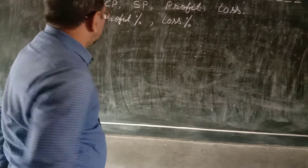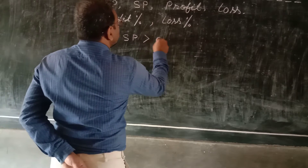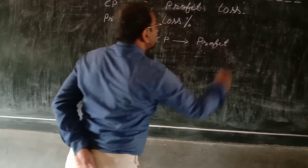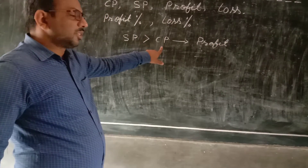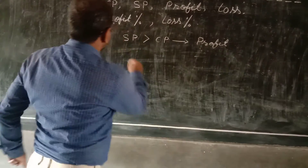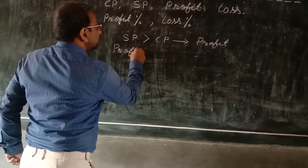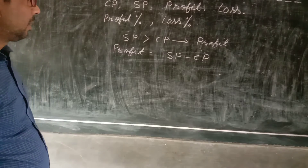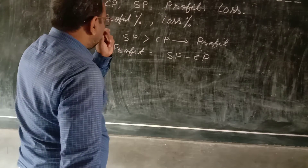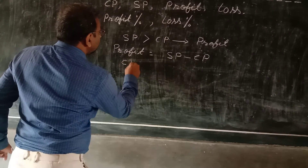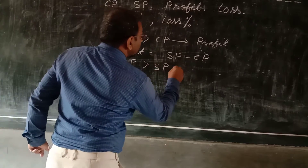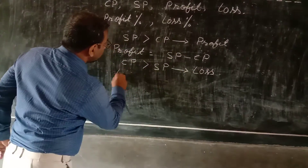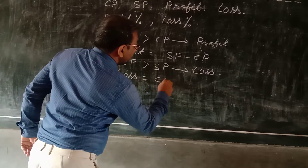Profit: when SP is greater than CP, there will be profit. Profit equals SP minus CP. Loss: when CP is greater than SP, in that situation we have loss. Loss equals CP minus SP.